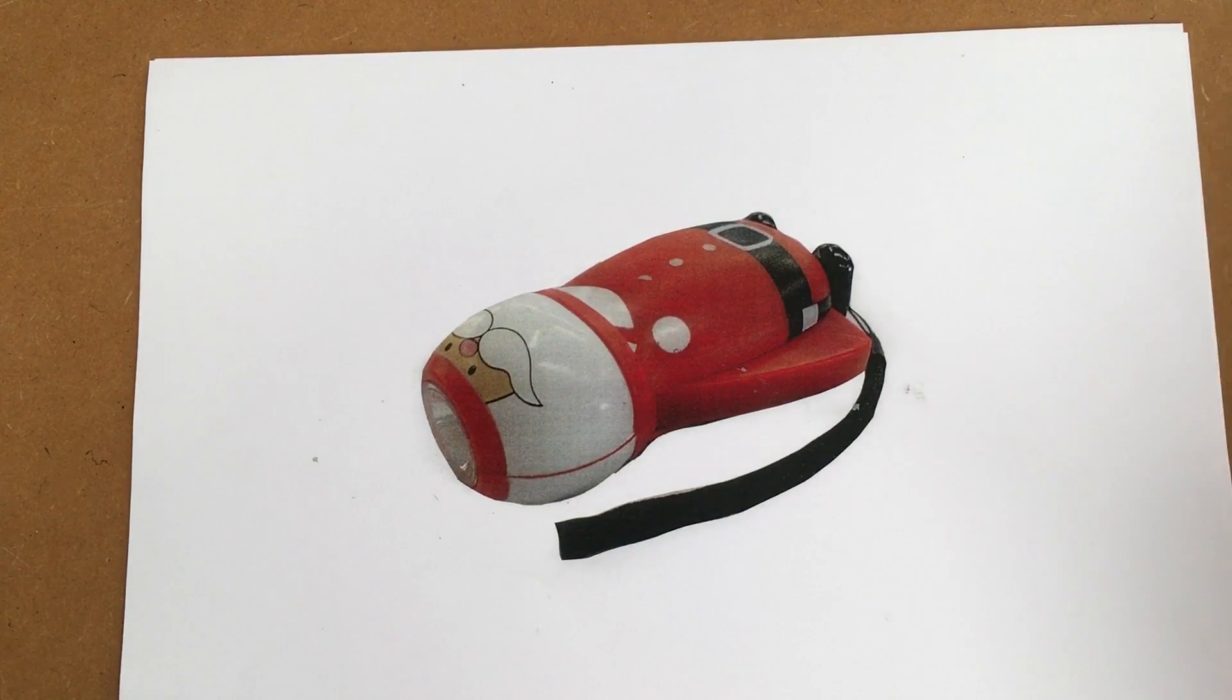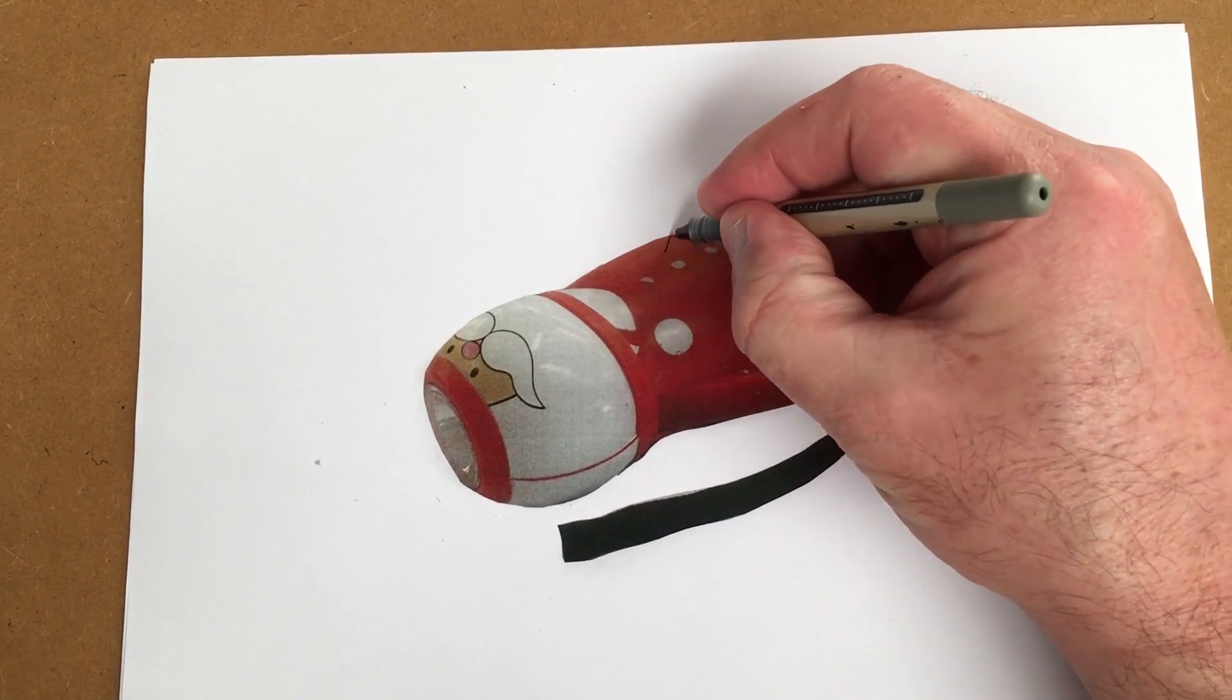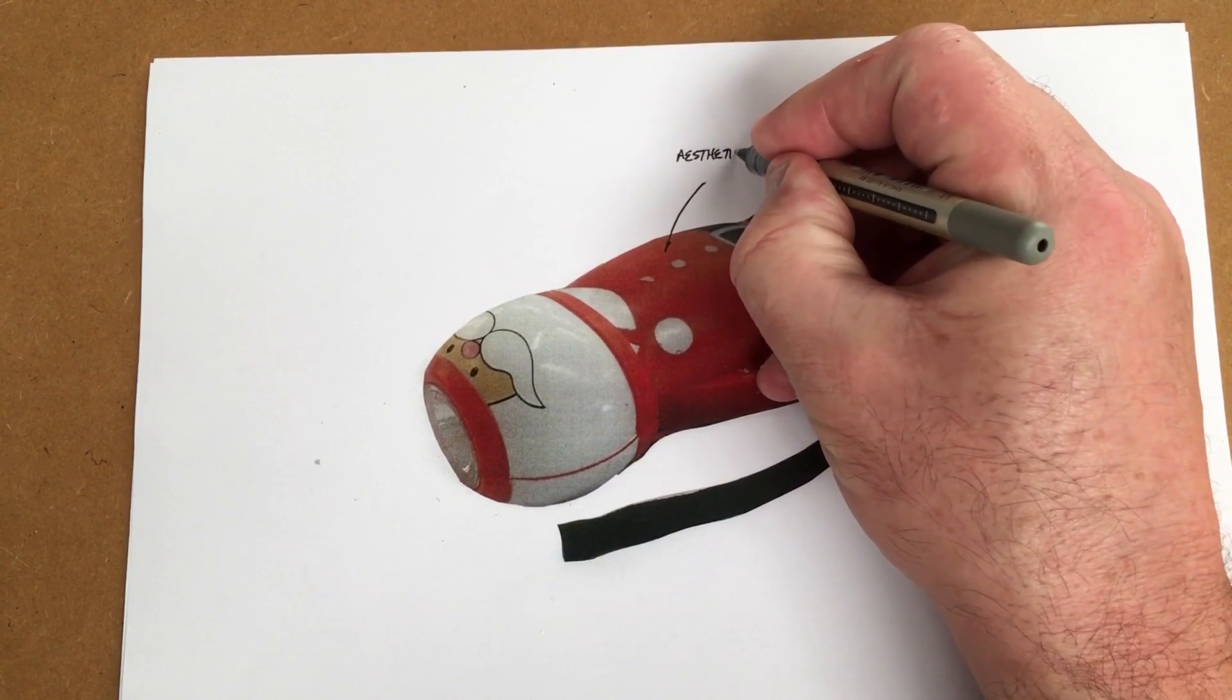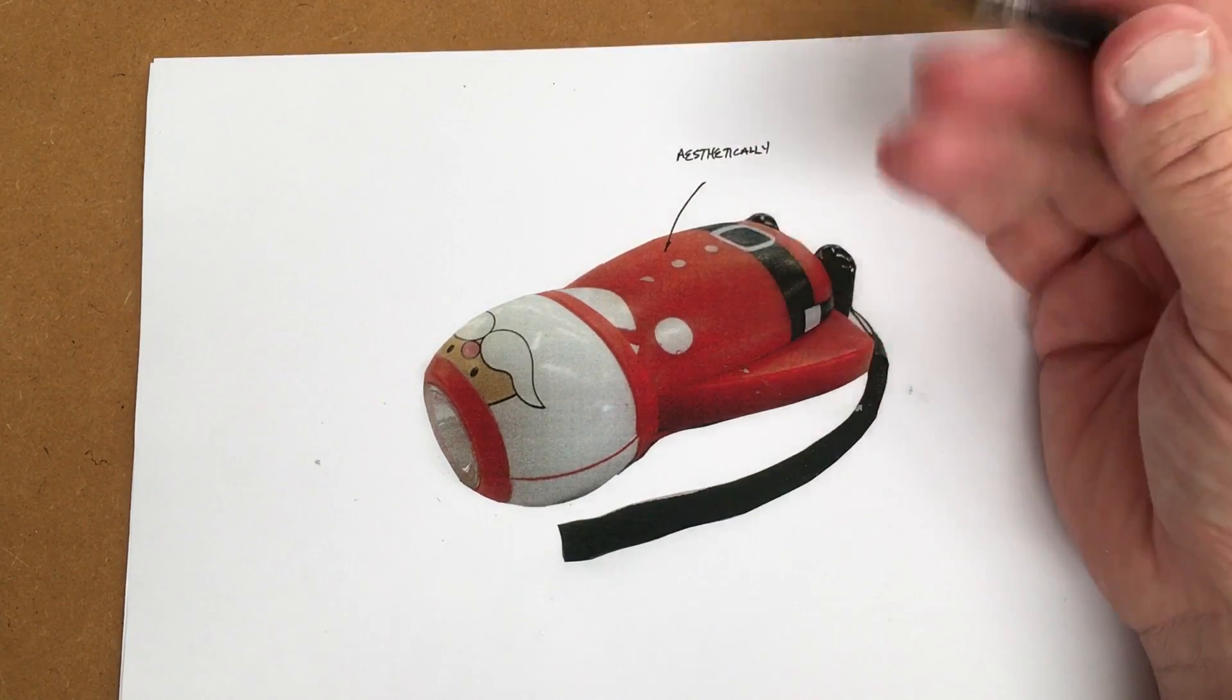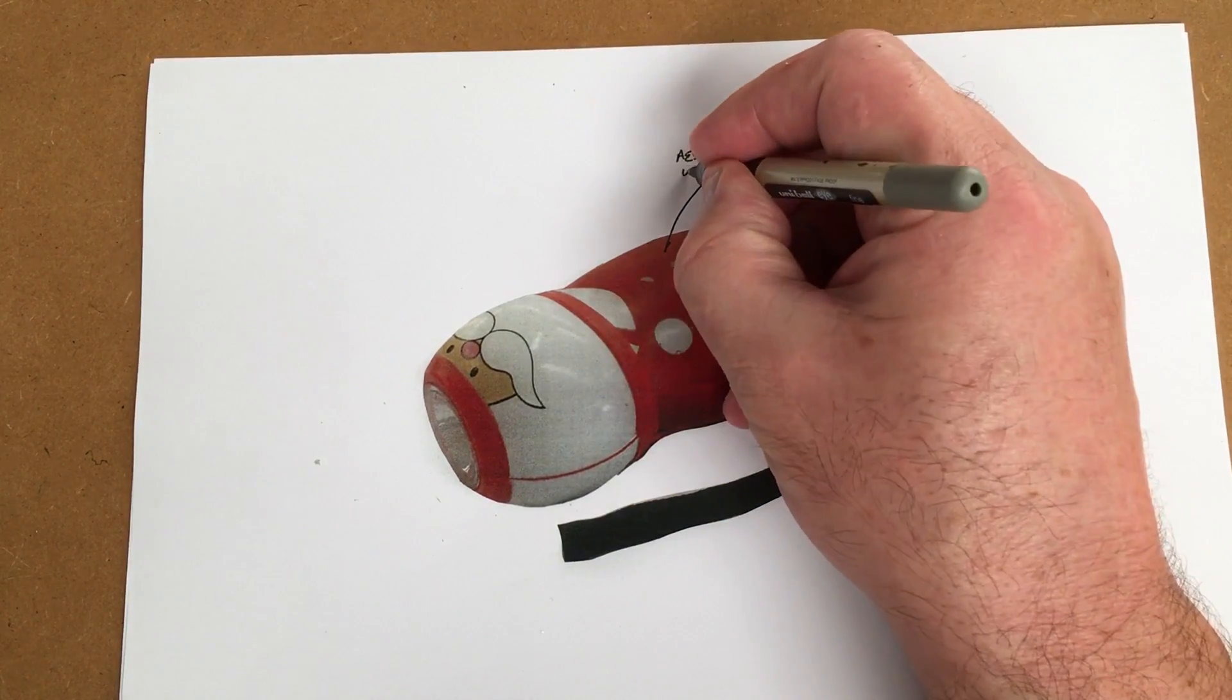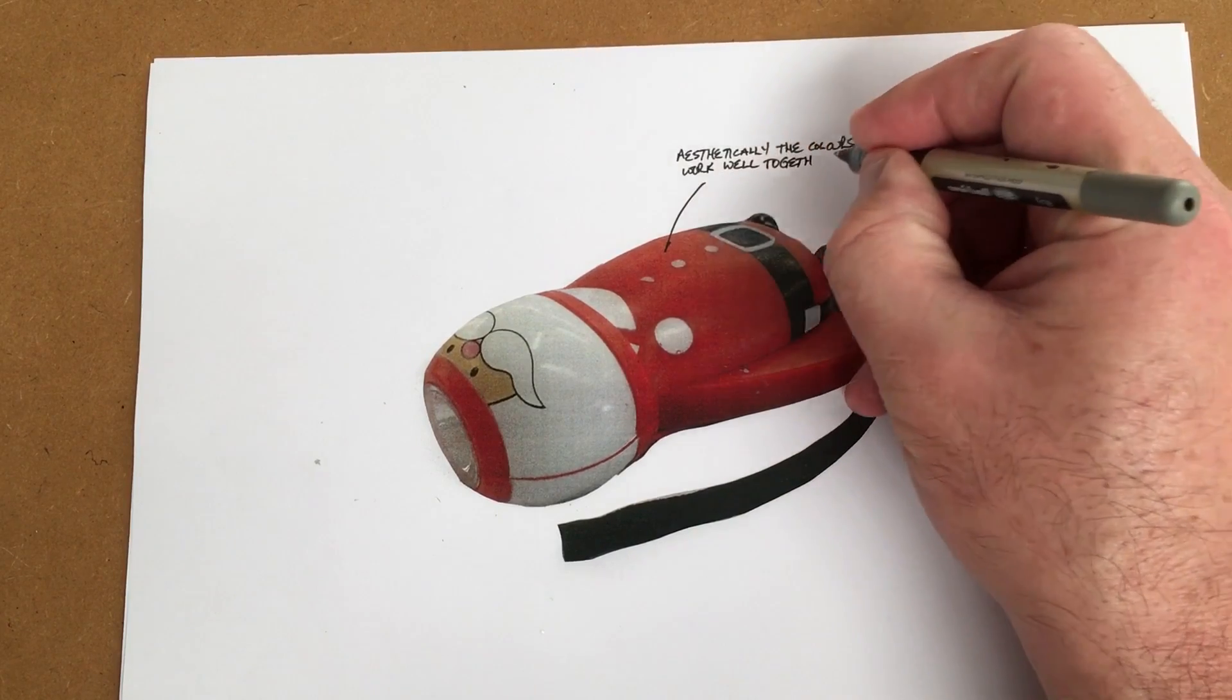You know the rules of annotation, we've done this in the past. Let's start with aesthetics then. Aesthetically, remember that's to do with how something looks, what it looks like, the color, the shape, and so on. Aesthetically, the colors work well together.